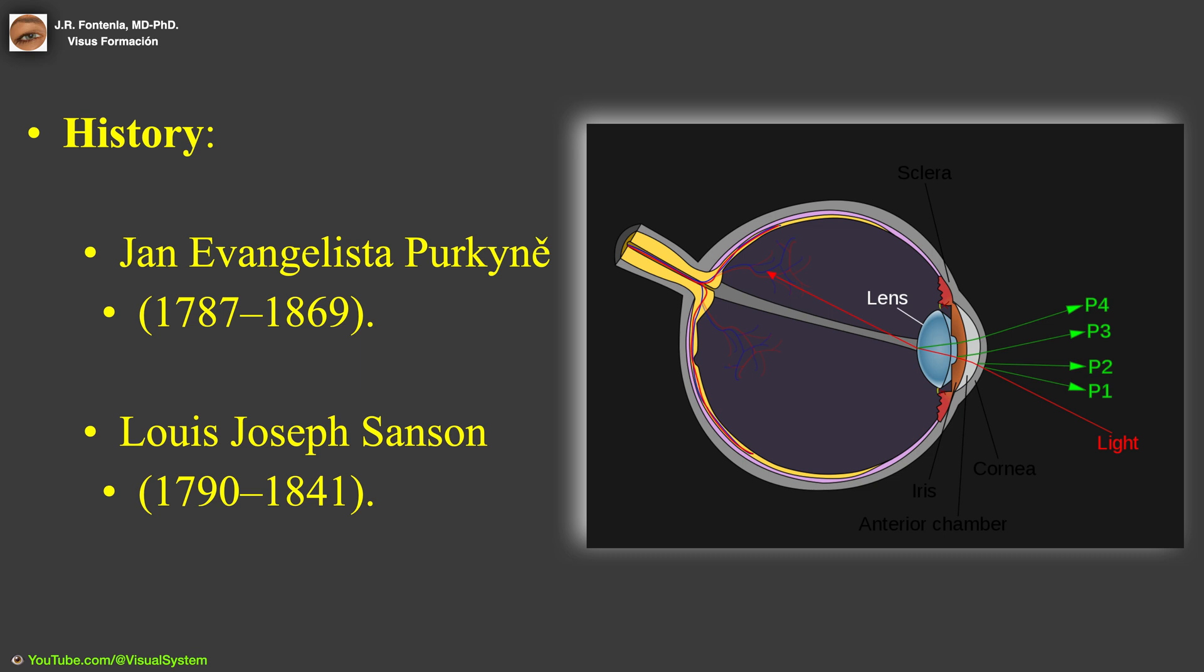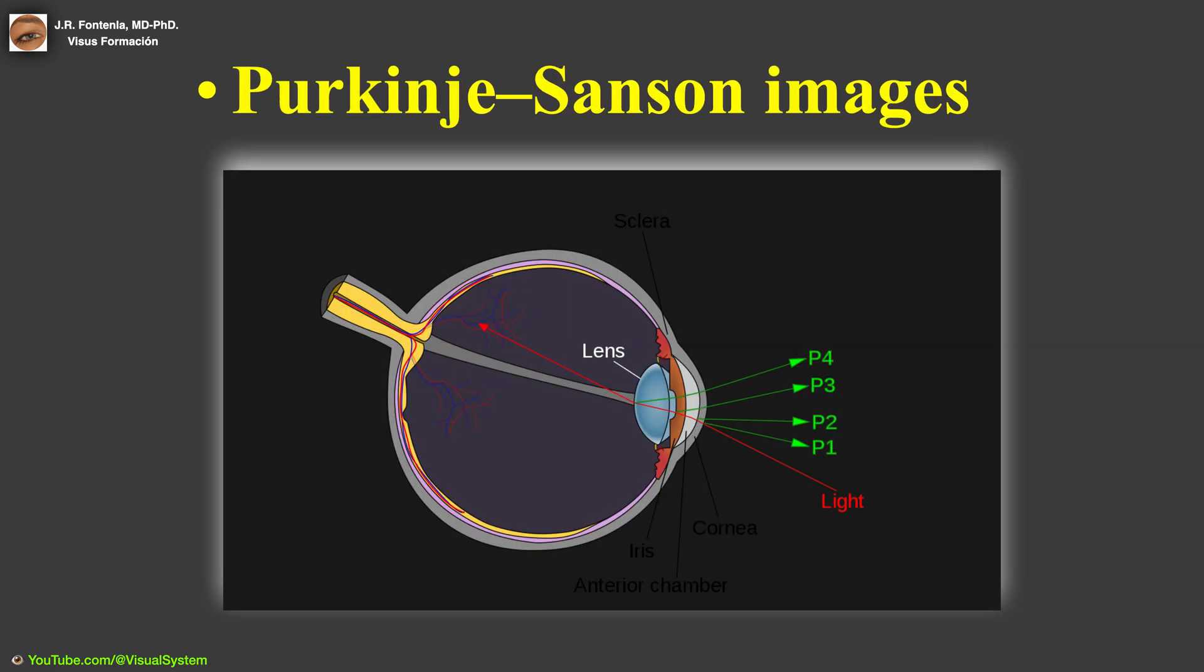The Purkinje images are named after the Czech anatomist Jan Evangelista Purkinje. A few years later, they were also studied by the French physician Louis-Joseph Sanson. Therefore, they are also called Purkinje-Sanson images.